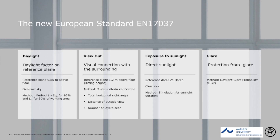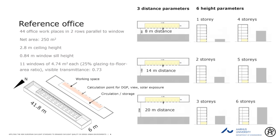We have now looked at some simulations where we've used the different criteria of the Daylighting Standard — looking at daylight factor on the reference plane with different levels, looking at the view out with different steps, assessing direct sunlight and glare. We used a reference office where we vary the distance of the neighboring facade and the height of the building. We're looking at a particular area six meters deep and 41.8 meters long, focusing on the working space area. Other areas are circulation and storage, and we calculated only one DGP point in front of the facade.